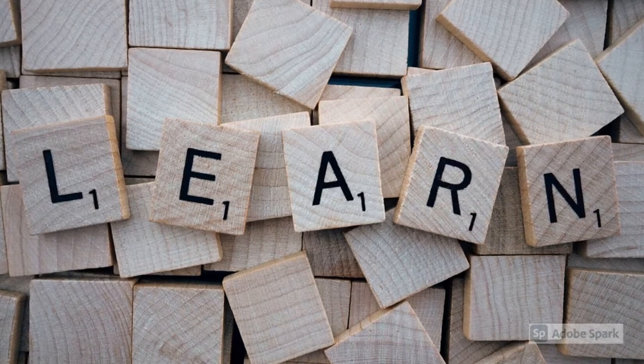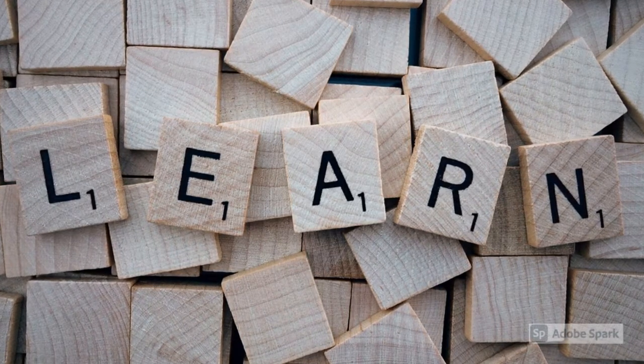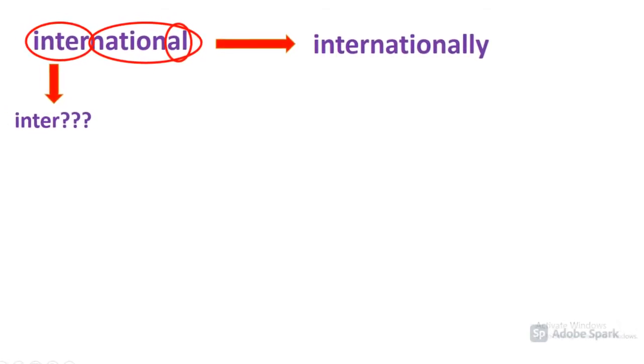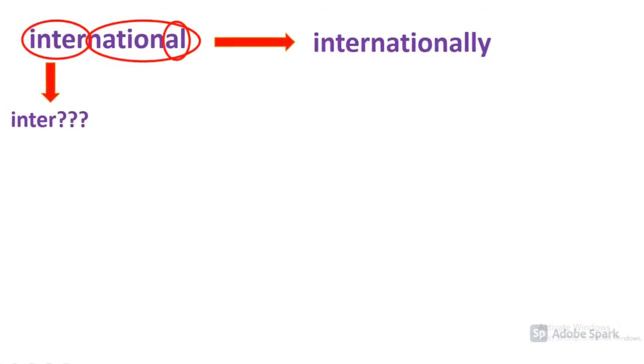Have you ever wondered why some English words look like others, depending on how we arrange the letters, and can be used for similar meanings? Take the word international, for example. We can clearly see the word national in the word, and we can see that there is a form of inter before the word national, making it international. So does this make inter a word? And how about that al at the end of national? Couldn't that be separated from the word nation? We could take it a step further and add ly to the end to make it internationally.